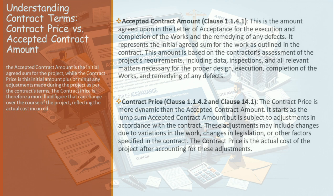First, let's talk about the accepted contract amount. The accepted contract amount is essentially the initial sum agreed upon in the letter of acceptance for the execution and completion of the works, including the remedying of any defects. It's the baseline figure that both parties agree upon at the outset of the project. But here's where it gets interesting: the accepted contract amount is not just a random figure — it's a carefully calculated sum that the contractor bases on a thorough assessment of the project's requirements.